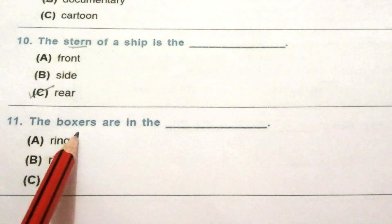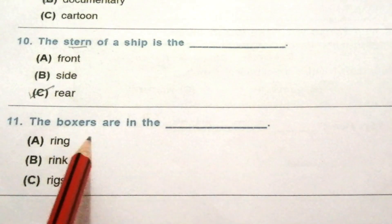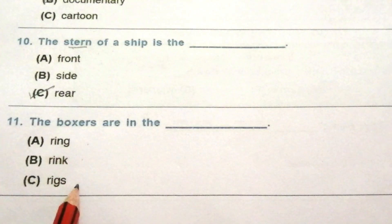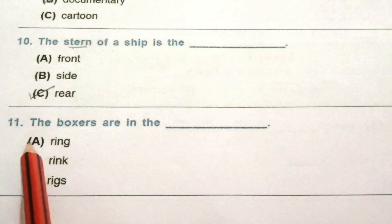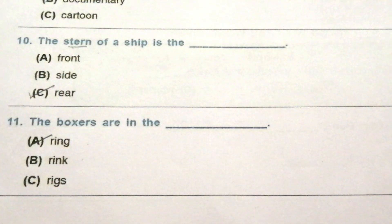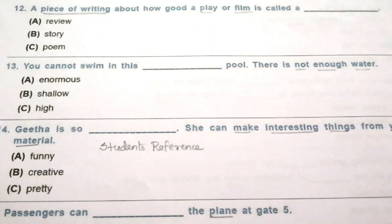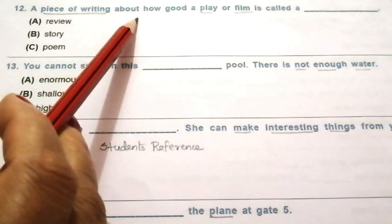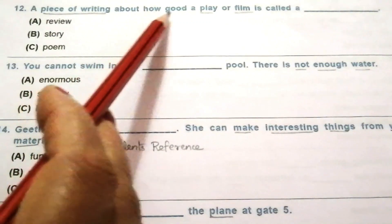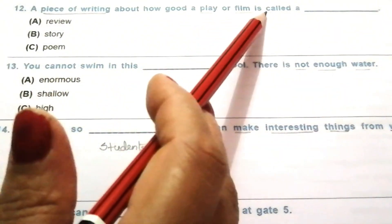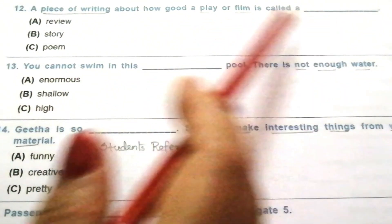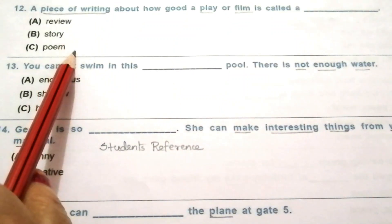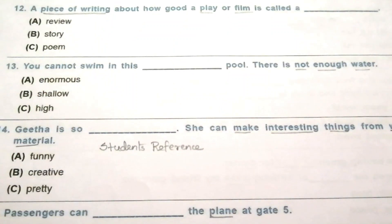Question 11: the boxes are in the — ring, rink, rigs. The answer is A, ring. The boxes are in the ring. Question 12: a piece of writing about how good a play or film is called a — review, story, poem. The answer is A, review.